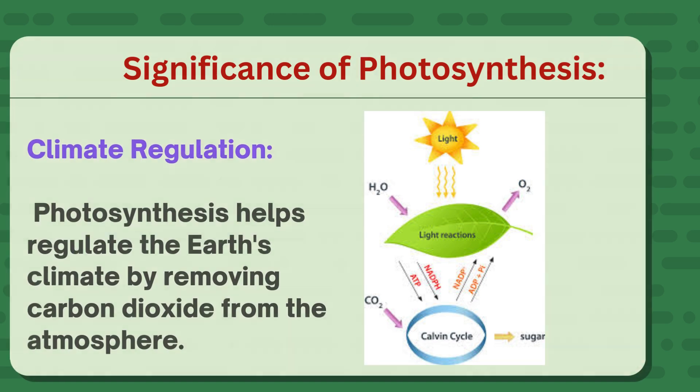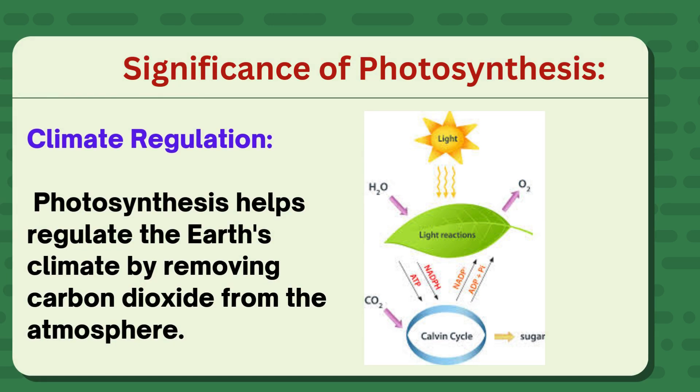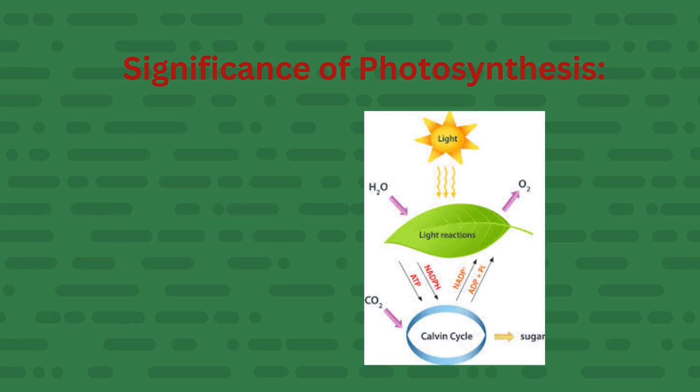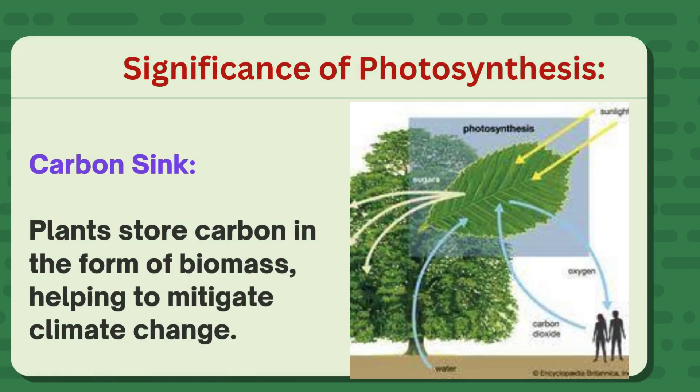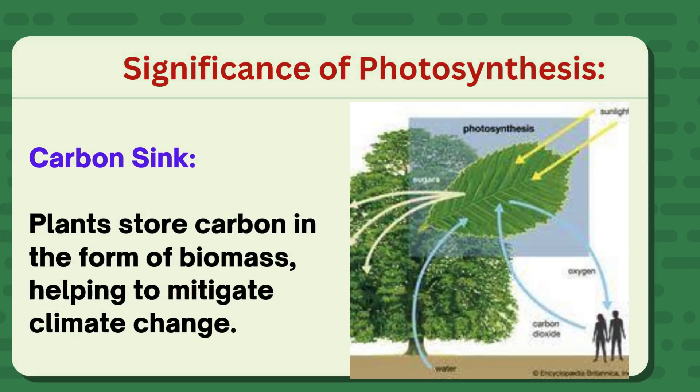Climate regulation: photosynthesis helps regulate the Earth's climate by removing carbon dioxide from the atmosphere. Carbon sink: plants store carbon in the form of biomass, helping to mitigate climate change.